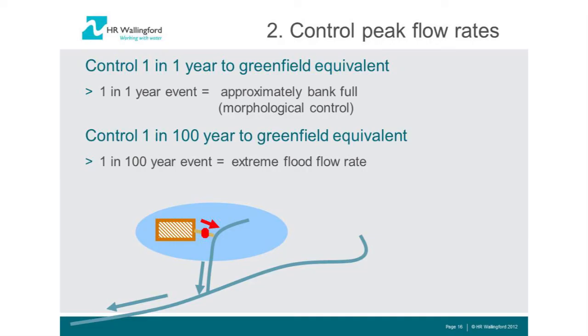The next objective is to control your peak runoff rates. The national standards focus on the 1-year return period — when receiving water bodies tend to be near bankfull — to ensure you're not increasing the frequency of those flows. The 100-year event is the flood risk management design event. At 1-year events you should achieve greenfield discharge rates, and at 100-year events you should achieve greenfield discharge rates too, controlling runoff at the point of discharge from the development.